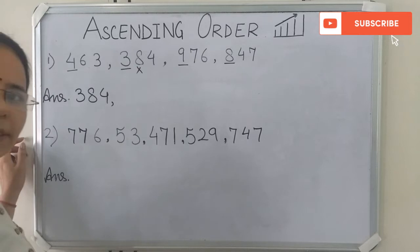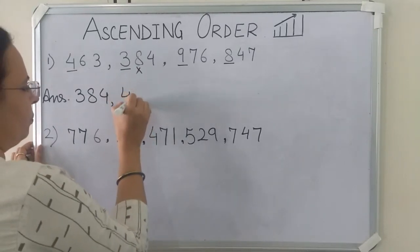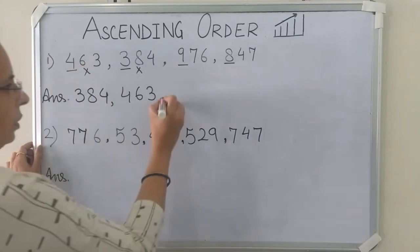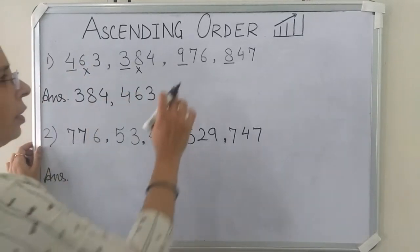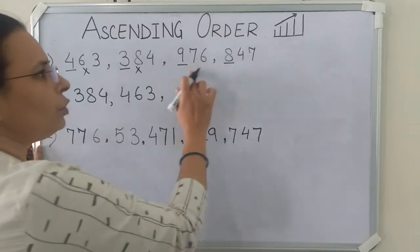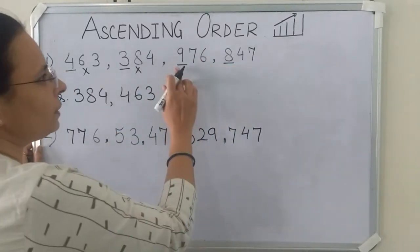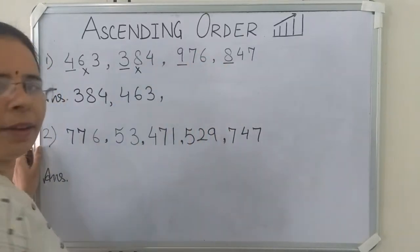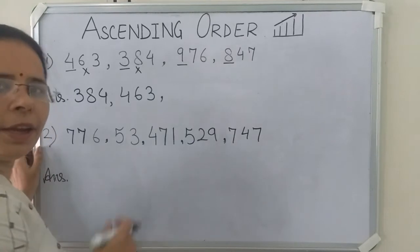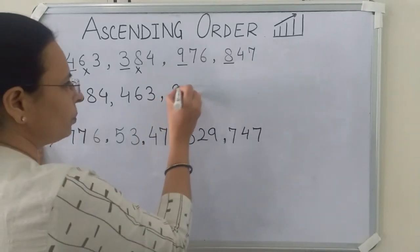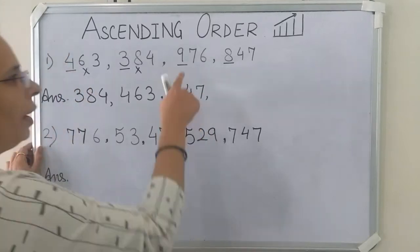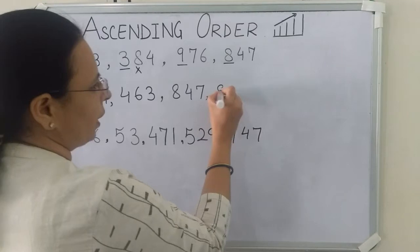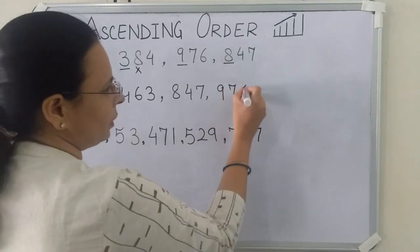So we will write 463. Now we have written 463, so we will cut it. Now we will compare these 2 remaining numbers. Which one is smaller? You can see here is 9 and here is 8. Since 8 is smaller than 9, we will write 847. And at last what is left? 976. So we will write 976.